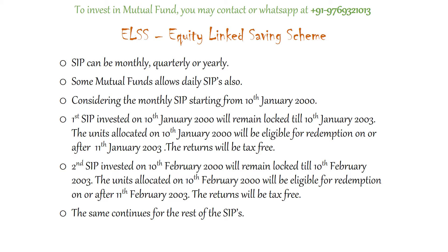Consider a monthly SIP starting from 10th January 2000 invested in ELSS. The first SIP invested on 10th January 2000 will remain locked until 10th January 2003 — that is, for 3 years. The units allocated on 10th January 2000 will be eligible for redemption on or after 11th January 2003, and the returns will be tax free.